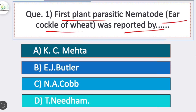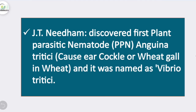Option D is correct — T. Needham. The first plant parasitic nematode, ear cockle of wheat, was reported by Needham. Needham discovered the first plant parasitic nematode, called PPN, and its name is Anguina tritici, which is the causal organism of wheat gall or ear cockle of wheat.